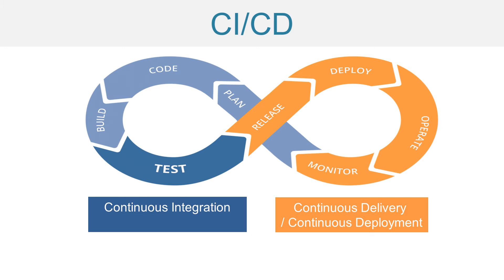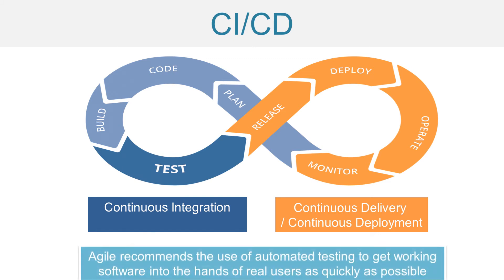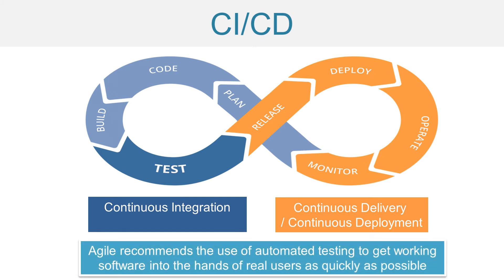CI/CD is essential to software development using Agile methodologies, which recommends the use of automated testing to get working software into the hands of real users as quickly as possible. This allows stakeholders and users to access newly created features and provide feedback as soon as possible, so features can be iteratively improved upon.